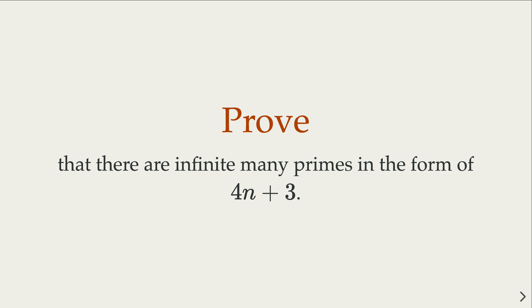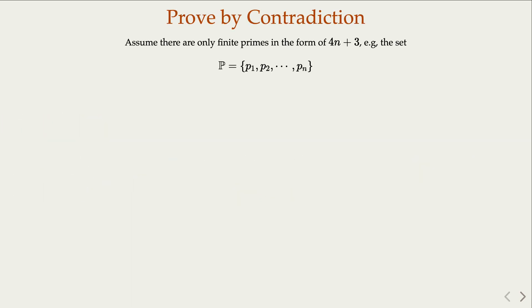We try to prove that there are infinitely many primes in the form of 4m plus 3. Alright, this is going to be another example of proof by contradiction.